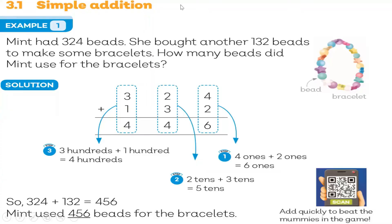Example number one. Mint had 324 beads. She bought another 132 beads to make some bracelets. How many beads did Mint use for bracelets? Here's our resolution: 324 plus 132. Step one — we need to add ones first. Four ones plus two ones equals six ones.